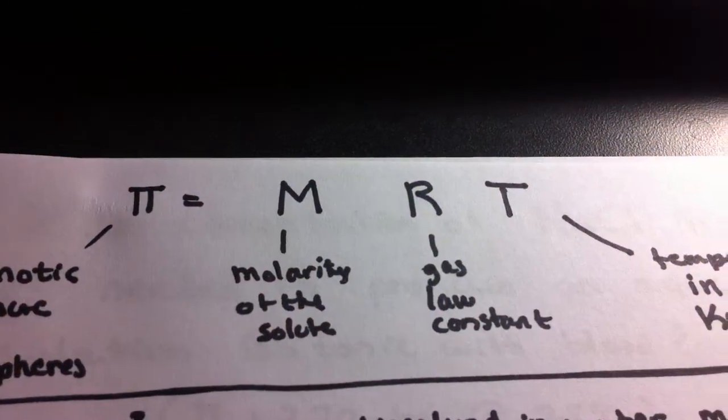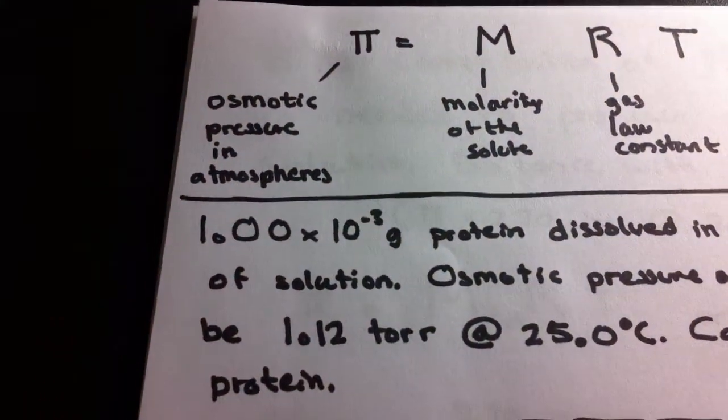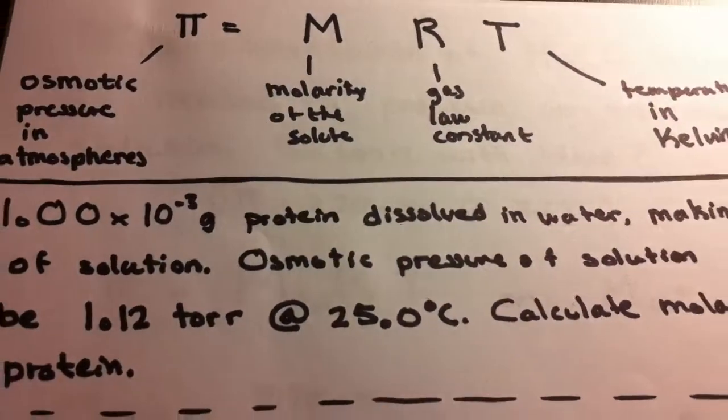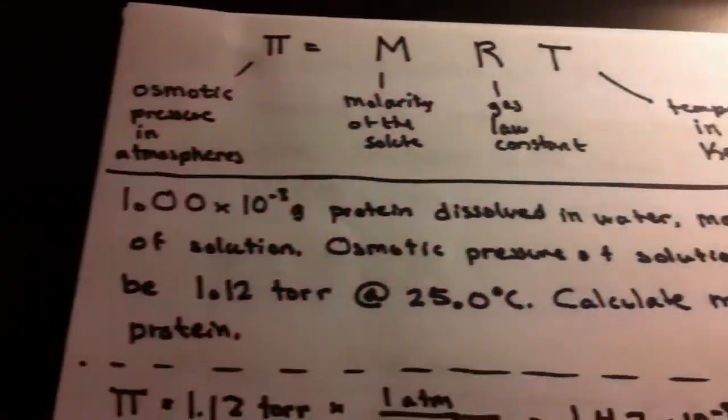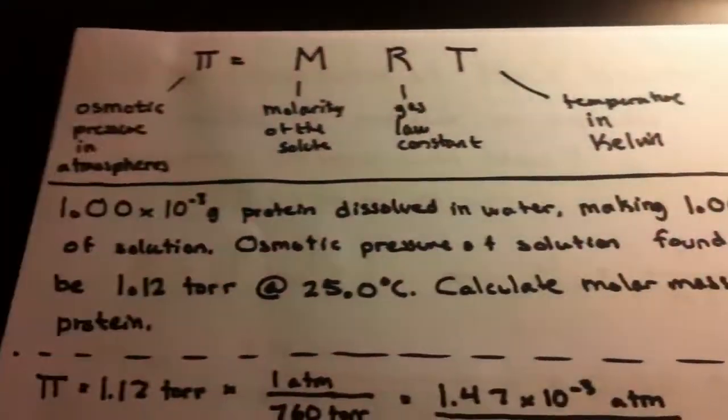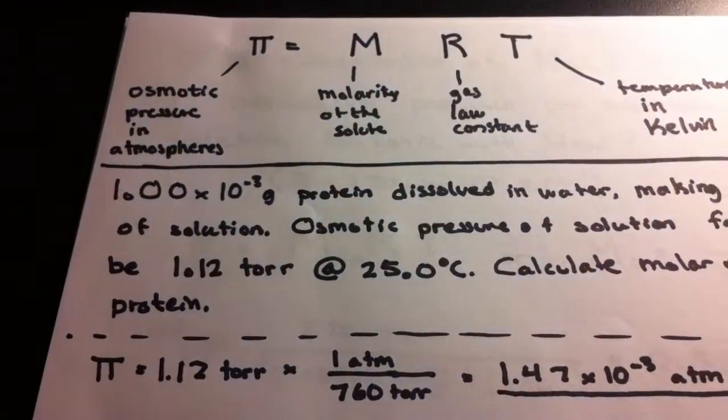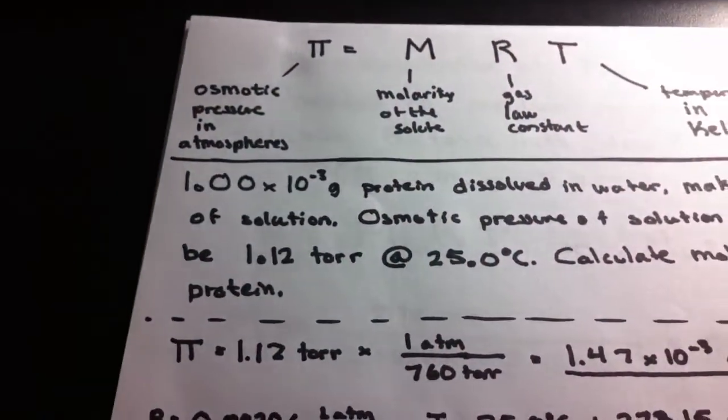We can apply this equation to a variety of circumstances, such as this example problem. In this case, we have 1.00 times 10 to the negative third grams of protein dissolved in water, making 1.00 milliliters of solution. The osmotic pressure is found to be 1.12 torr at 25 degrees Celsius. Here we want to find the molar mass of the protein.